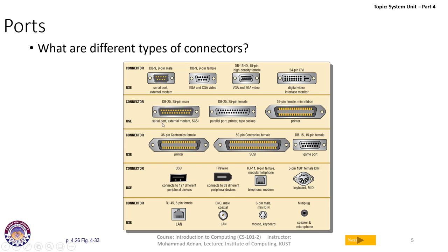For a printer or tape backup, a parallel port is used having 25 pins — it's a female parallel port. It is called parallel because multiple bits are transferred at one time. We also have a 36-pin female mini ribbon printer port, which is an advanced version. There is a Centronics female printer connector, SCSI Centronics female connector, and a 25-pin female game port for people interested in playing games.